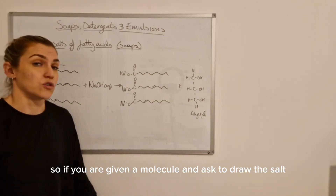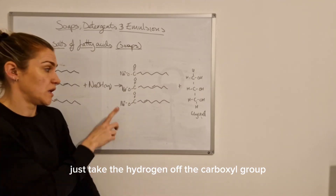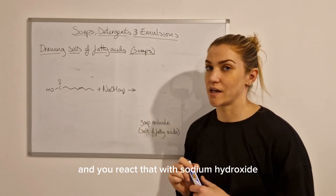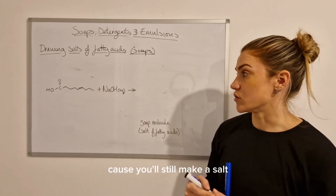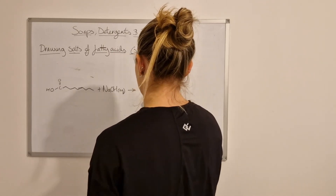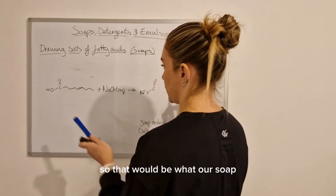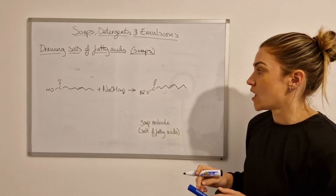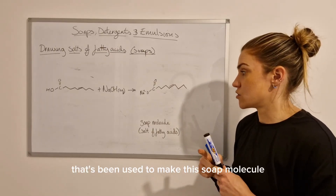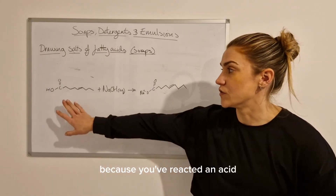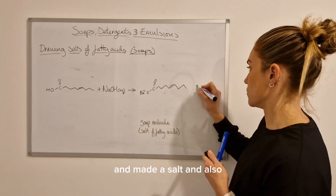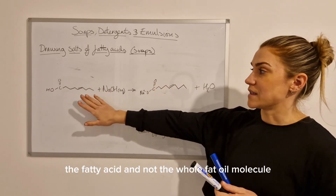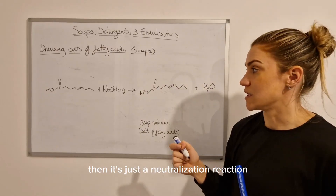That is what the salt of a fatty acid looks like - you just replace the hydrogen with the sodium ion, and it really is as straightforward as that. If you are given a molecule and asked to draw the salt that would be formed, just take the hydrogen off the carboxyl group and replace it with the sodium. If you're presented with just the fatty acid and react it with sodium hydroxide, you'll still make a soap because you'll still make a salt. However, this isn't alkaline hydrolysis - it's just a neutralization reaction, because you've reacted an acid with an alkali to make a salt and water.